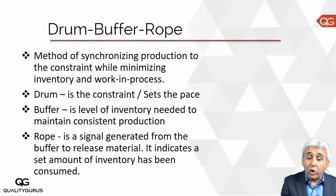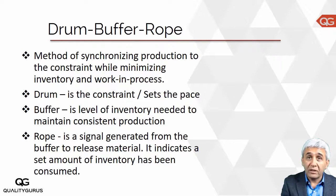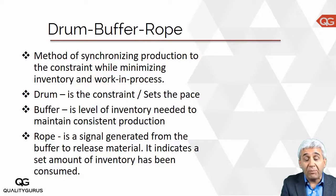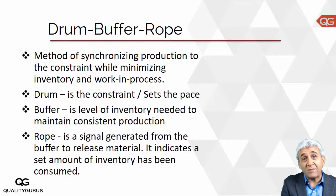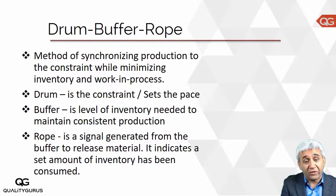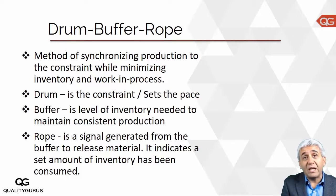The buffer is the inventory which is in front of the constraint. The drum is the constraint itself — it sets the pace of the whole process. In the case of 60, 30, and 60 pieces per hour, the second process was the one setting the pace of the overall process.